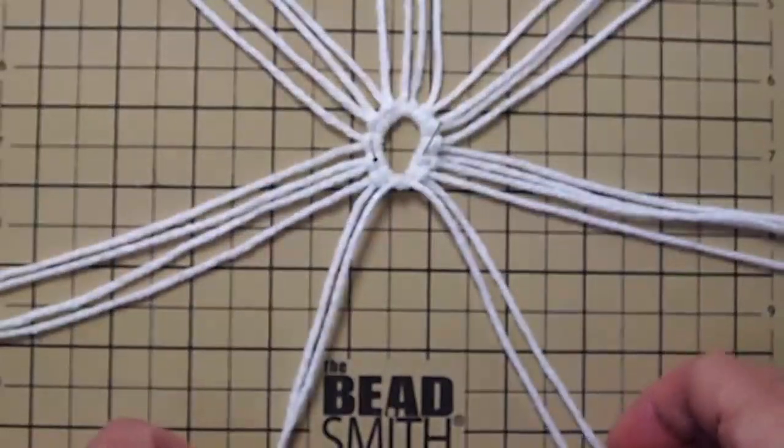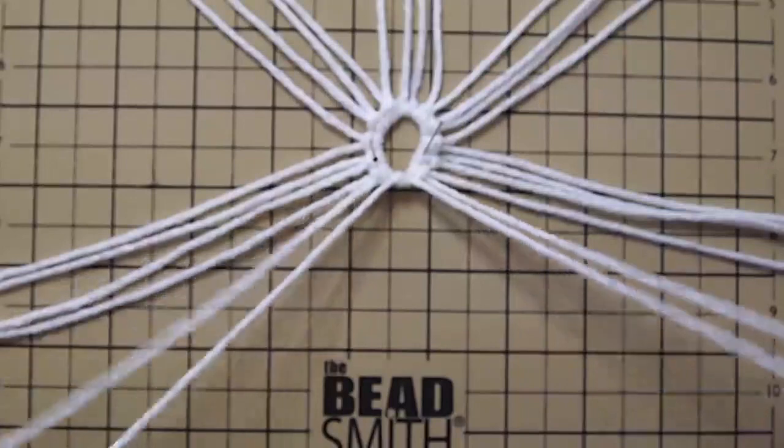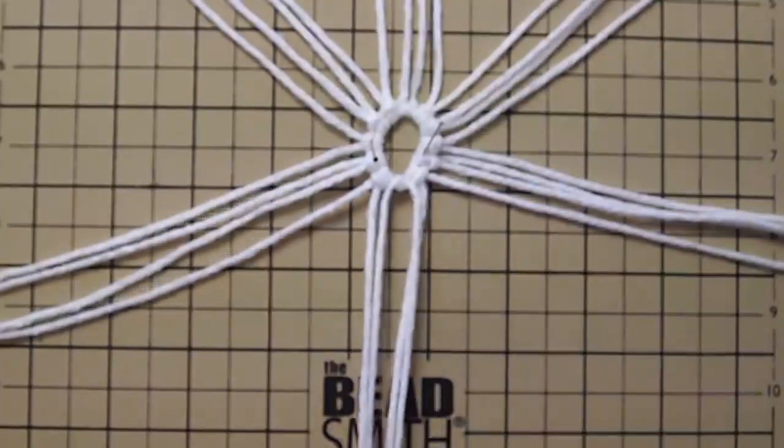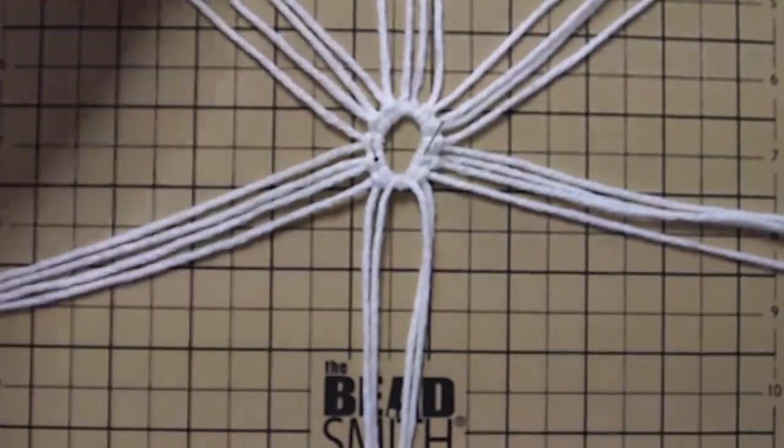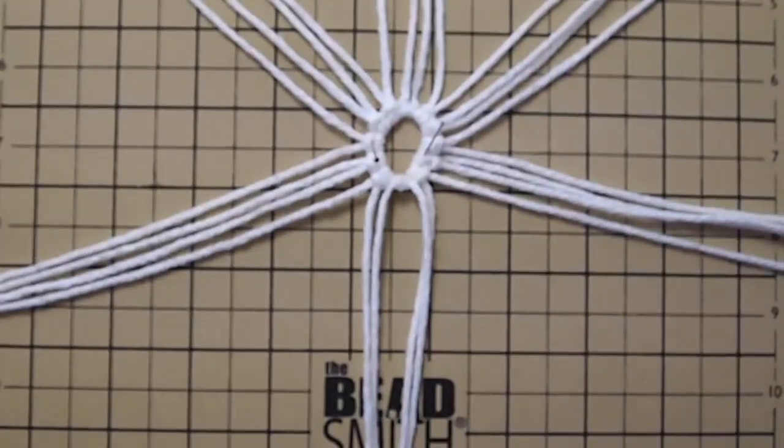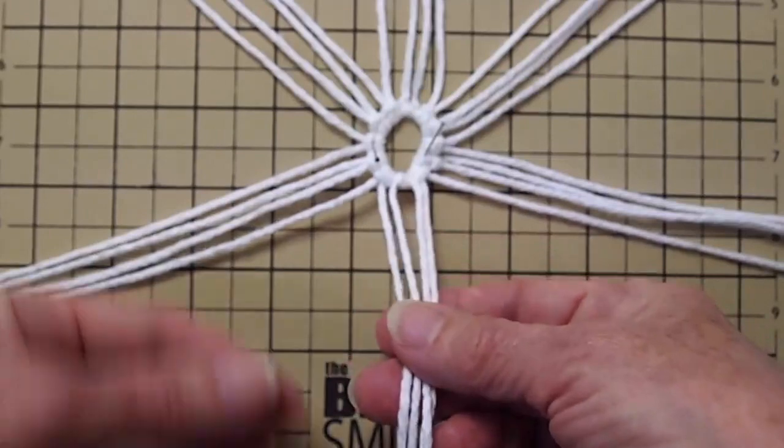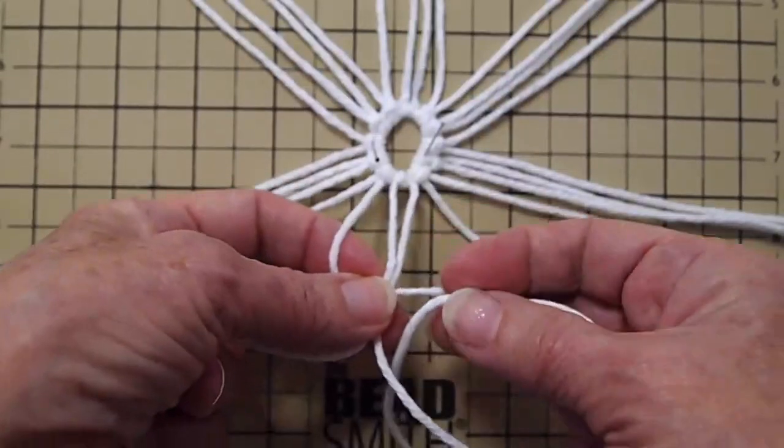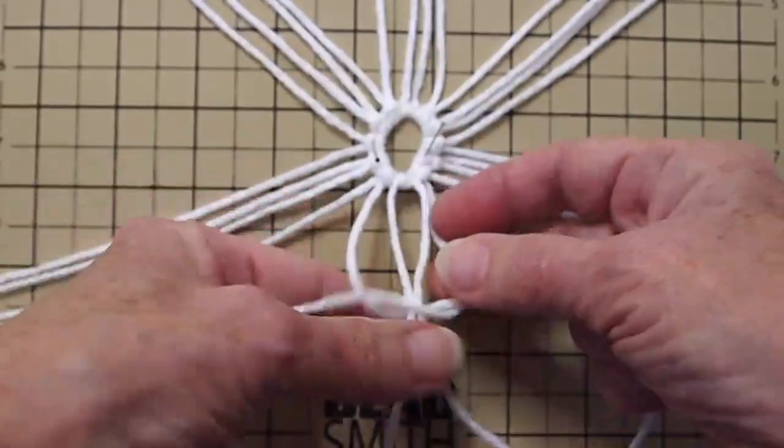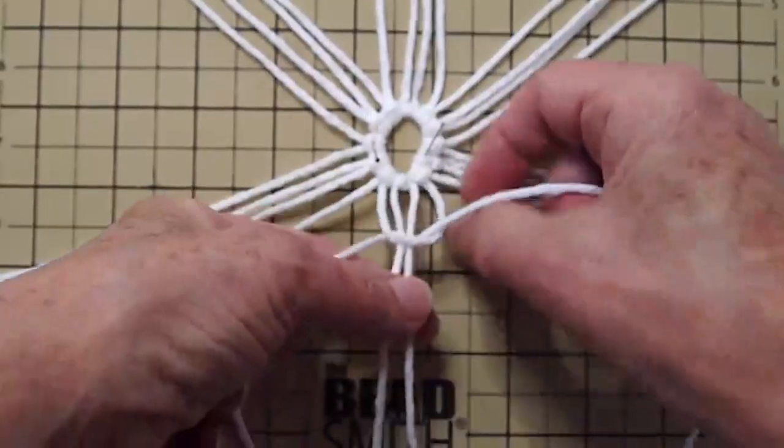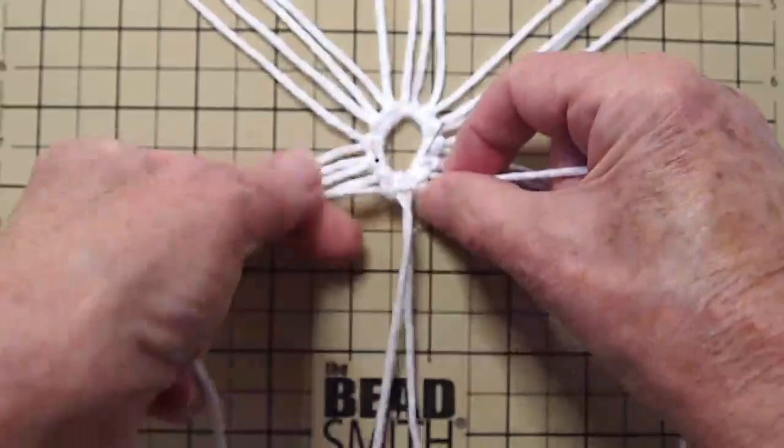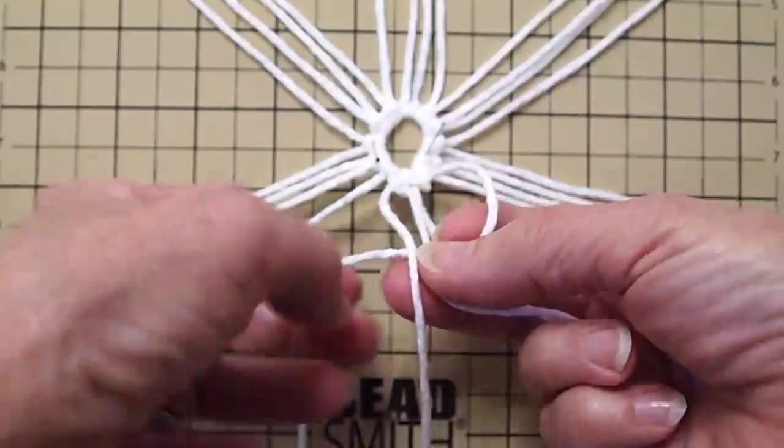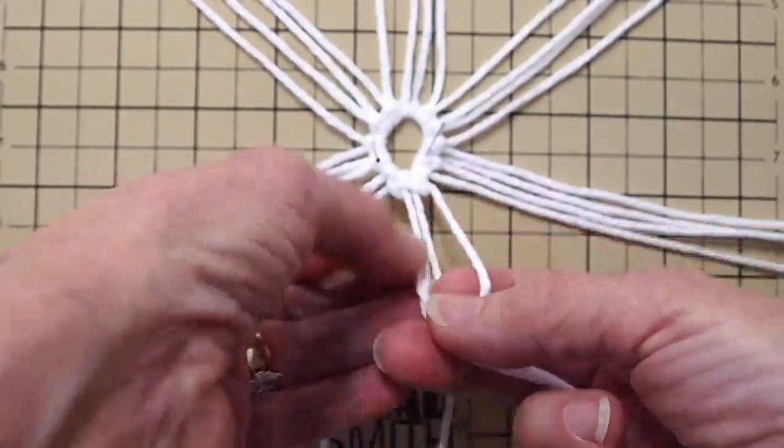Now we'll tie the second part of the knot so it's nice and secure, and we're going to take those two cords and the next two cords so we have a group of four. We're going to start out with a square knot, which I have shown you how to do in previous videos.